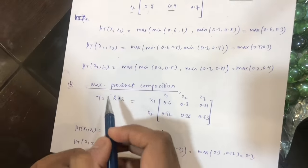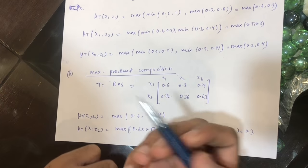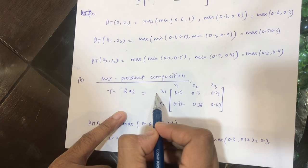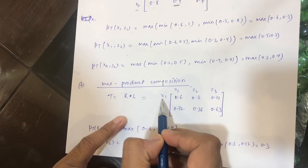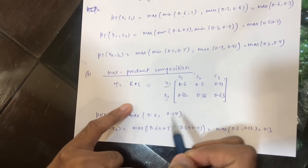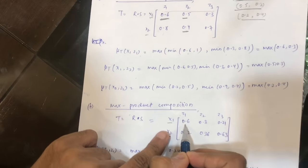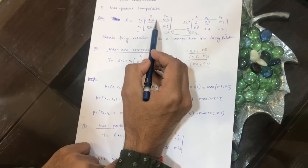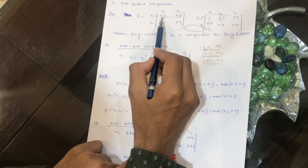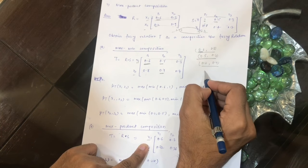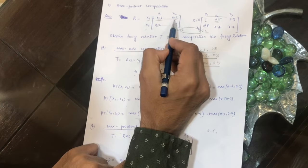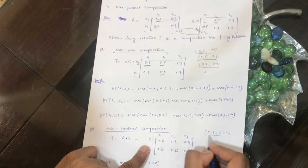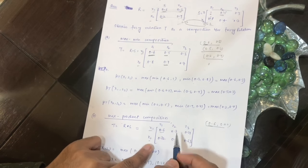Now let us look at max-product composition, which is easier compared to max-min composition. Again we get a 2×3 result matrix with x1, x2 as rows and z1, z2, z3 as columns. For x1, z1 — first row and first column — instead of taking the minimum we take the product: 0.6 × 1 = 0.6 and 0.3 × 0.8 = 0.24. The maximum of these is 0.6, so we write 0.6 there.